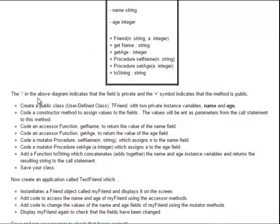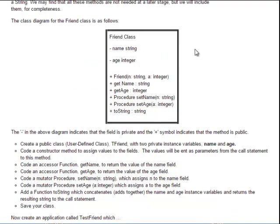I could have removed all this writing down below here by just giving you this class diagram for the friend class. You must create a class with these two fields and they must be private, and those are their data types. And these must be the methods. So let's go and do that now.